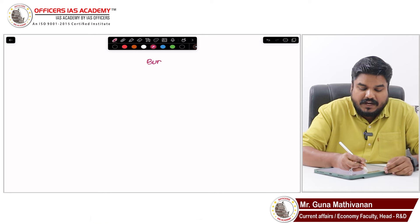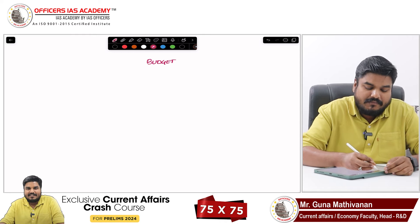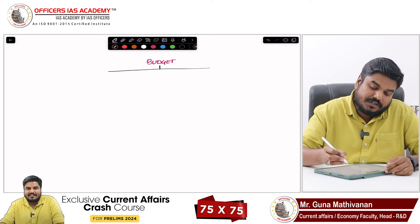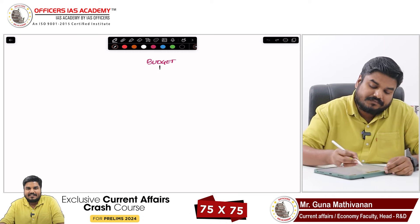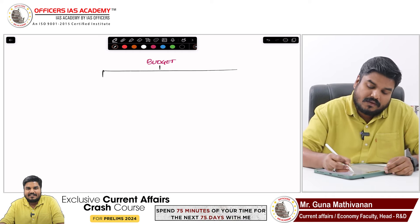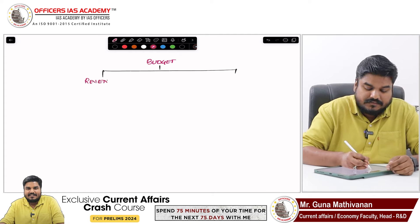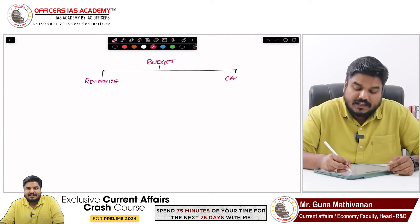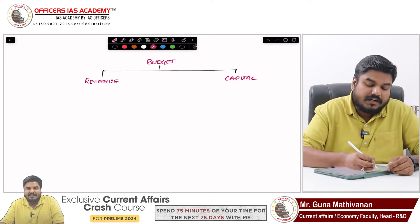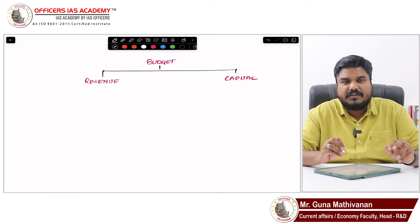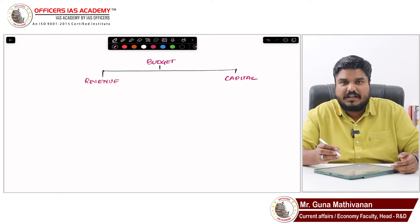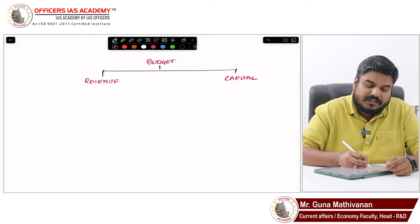In this video I am going to explain about the components. The budget can be broadly divided into two components: one is the revenue component and the other is the capital component. In this video I am going to explain only about the revenue component; the next video I will explain about the capital component. This revenue component I can further divide into revenue receipt and revenue expenditure.